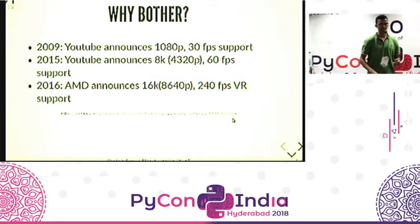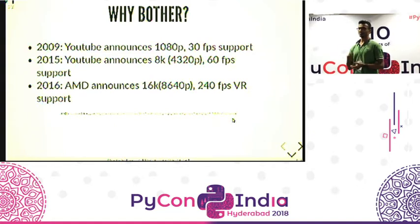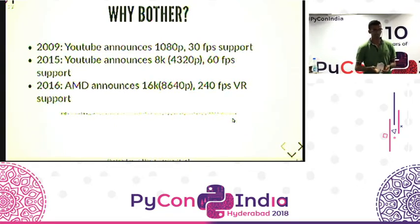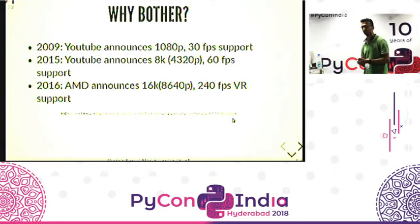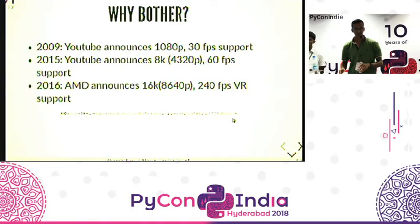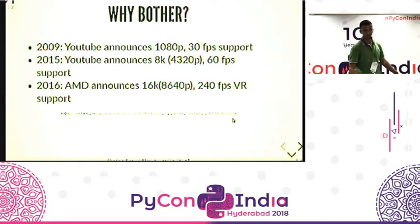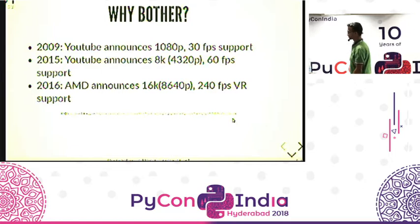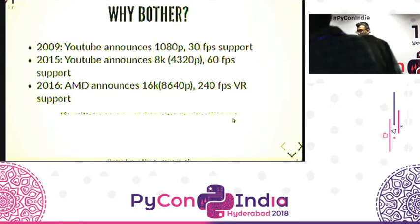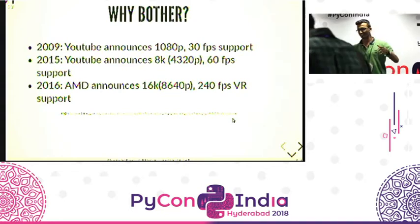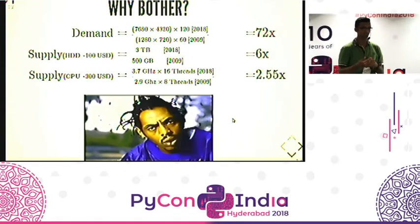Back in 2009 was when YouTube first announced support for 1080p video at 30fps. In 2015, they announced support for 8K video at a higher frame rate. Just two years back, AMD launched their first 16K graphics card supporting 16K at 240fps for VR. But realistically, none of us consider 16K to be state-of-the-art right now. If we look at the scale at which demand has increased from 2009 to 2018, taking 8K as state-of-the-art today and 720p as state-of-the-art then, demand has actually increased by 72 times.